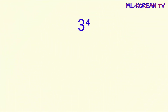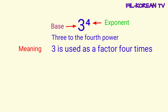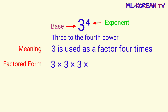In the exponential notation 3 to the 4th power, 3 is the base. Base is the number used as a factor. And 4 is the exponent. The exponent tells us how many times we are going to multiply the base, or how many times we will use the base as factor. 3 to the 4th power means 3 is used as a factor 4 times. In factored form or expanded form, we can write this as 3 times 3 times 3 times 3.